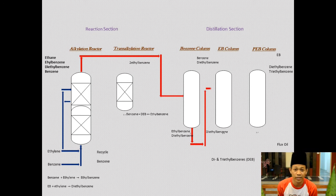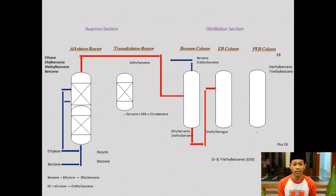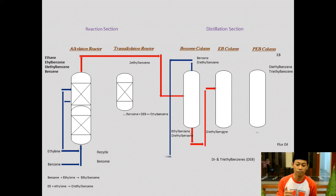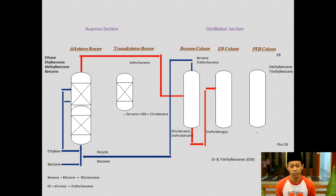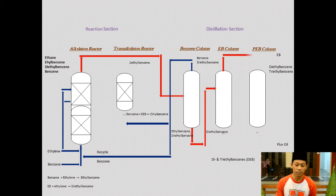At the alkylation reactor outlet, the stream consisting of ethylene, benzene, diethyl benzene, and ethyl benzene is fed to the benzene column. In the benzene column, the products are separated to obtain ethyl benzene and diethyl benzene. The overhead product — benzene — is fed back into the transalkylation reactor and alkylation reactor to react with fresh ethylene and benzene to produce more ethyl benzene. The bottom of the benzene column, consisting of ethyl benzene and diethyl benzene, is fed into the ethyl benzene column.